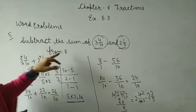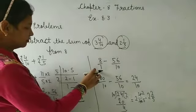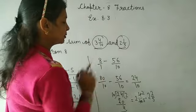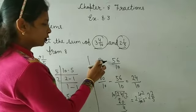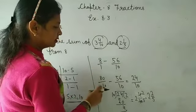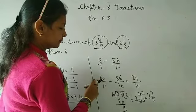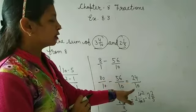Now we need to subtract this from 8. 8 upon 1 minus 56 upon 10. We need to convert to denominator 10. Multiply both by 10: 8 becomes 80, 1 becomes 10. Now subtract 56 from 80. What do we get? 24 upon 10.